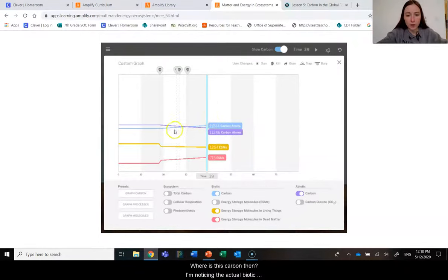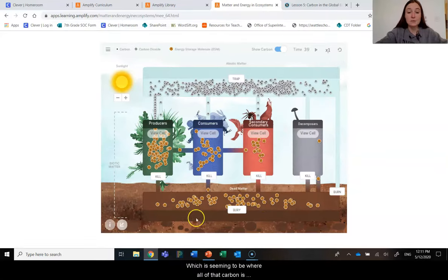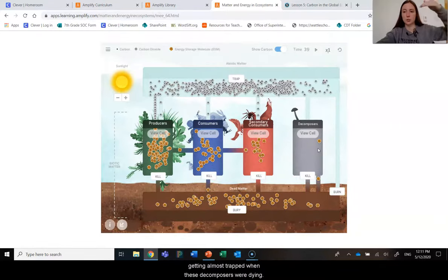But where is this carbon then? I'm noticing the actual biotic carbon is actually increasing at that time. But where in the biotic carbon is that getting stored? Well, something I can see is this pink line is really starting to increase. And that is the energy storage molecules in the dead matter, which is seeming to be where all of that carbon is getting almost trapped when these decomposers were dying out.